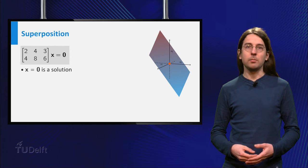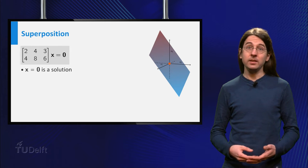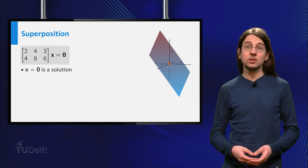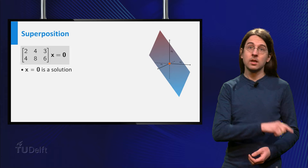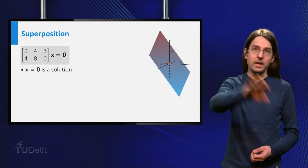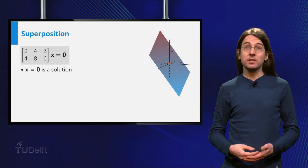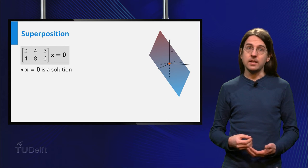And depending on the number of free variables you obtain when row reducing the matrix A, the set of solutions is either just a single point, a line, a plane, etc. For the matrix on the slide it is the indicated plane.